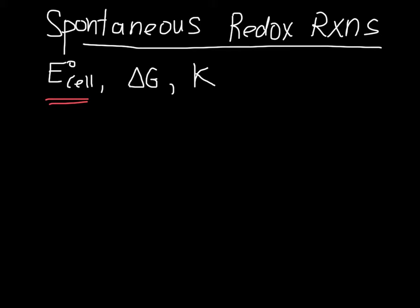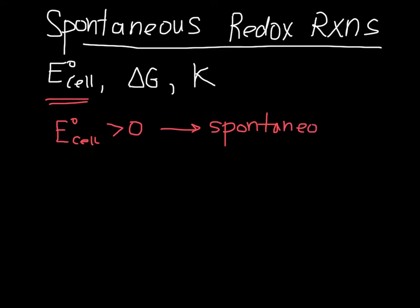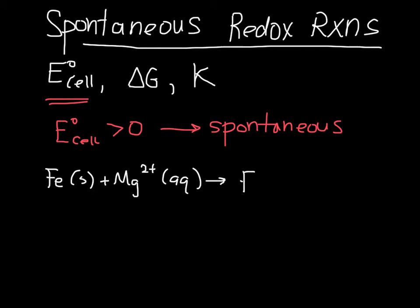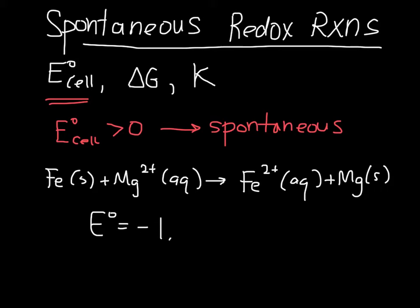In terms of the cell potential, spontaneous reactions are those which have a positive cell potential. In the last video, we looked at an example with iron solid and magnesium ions going to iron and magnesium, and we calculated that the cell potential was negative 1.92 volts. So this is an example of a reaction which is not spontaneous.